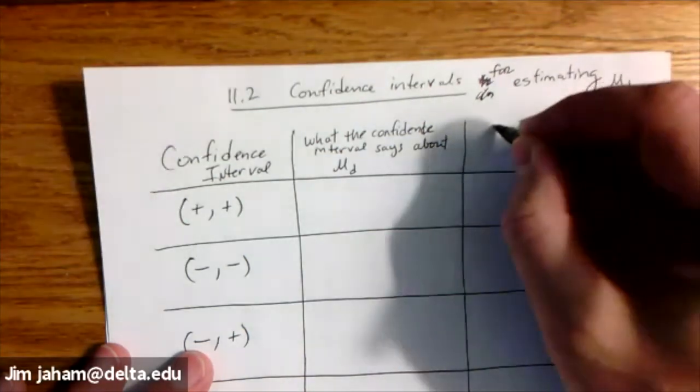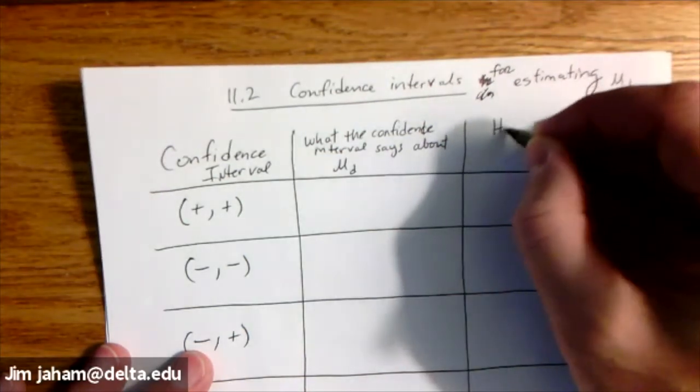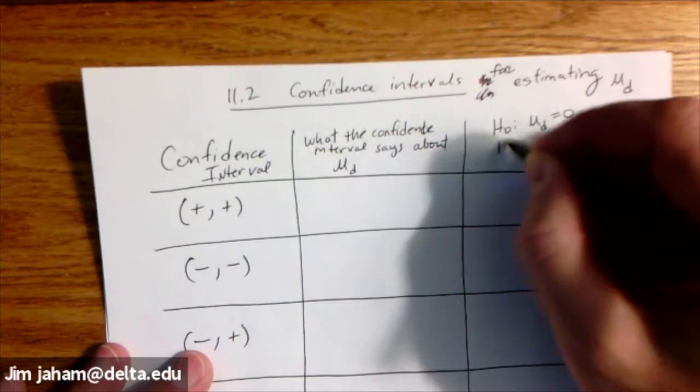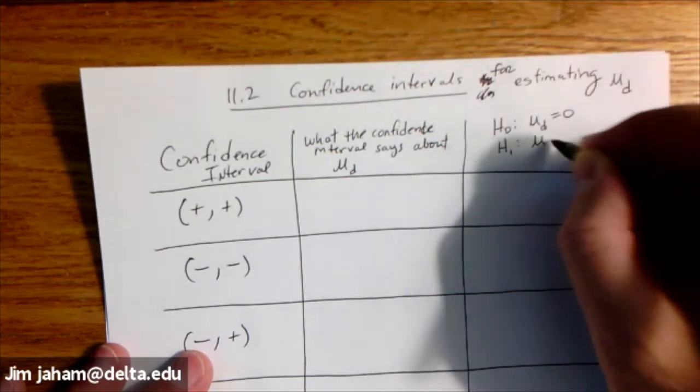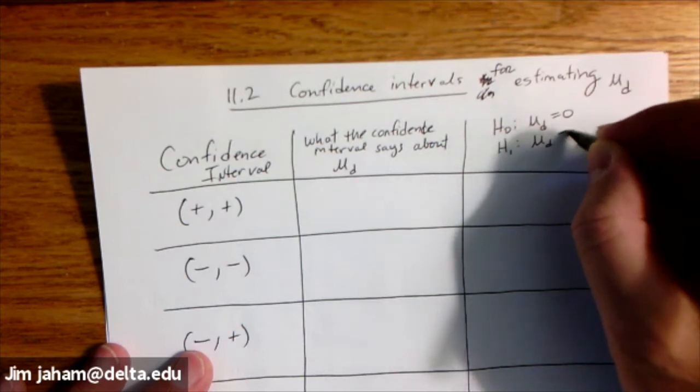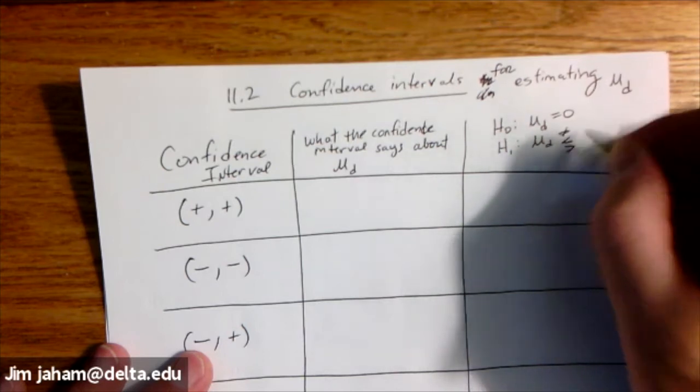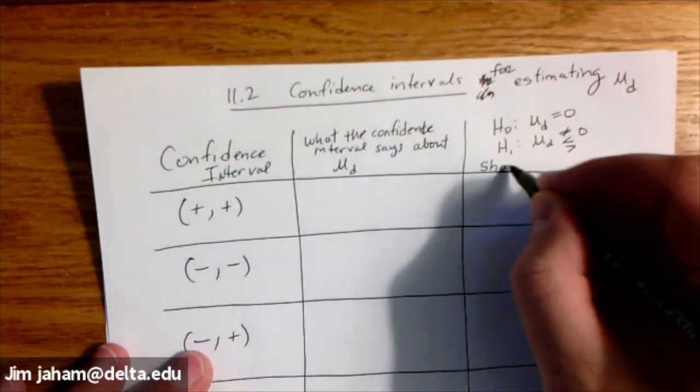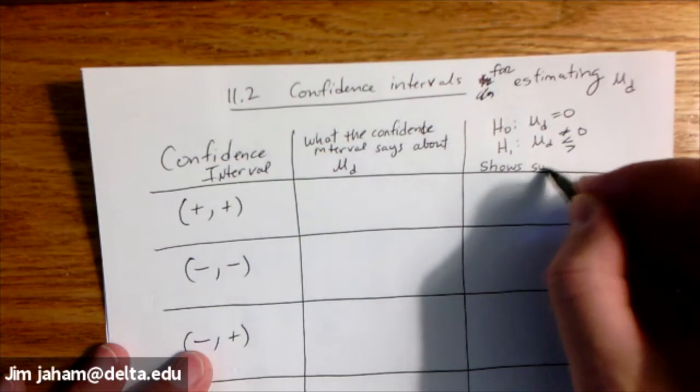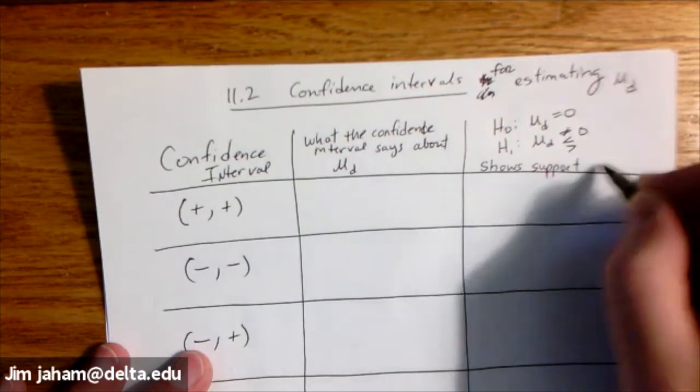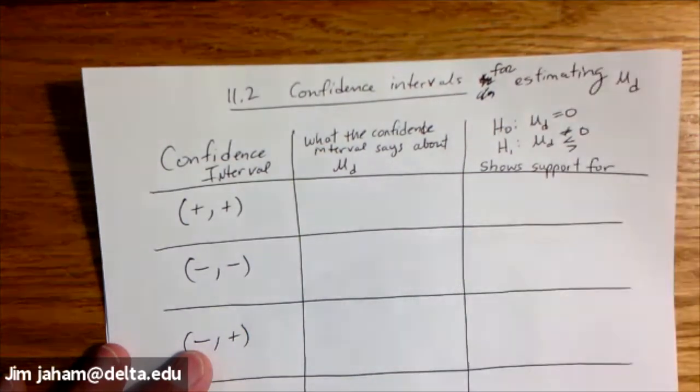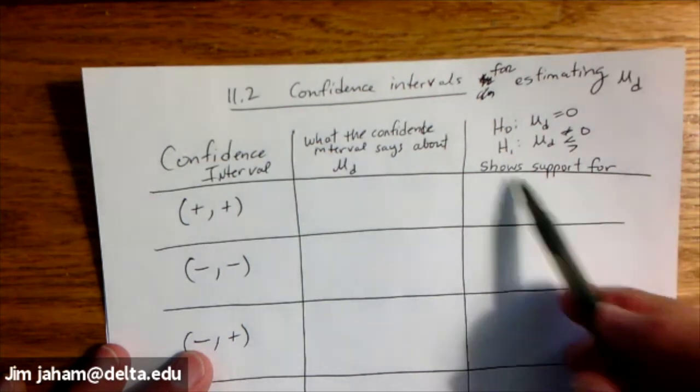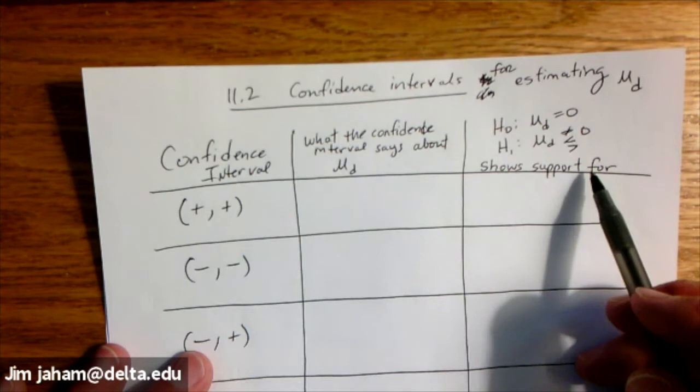And then over here, if the null hypothesis is mu sub d equals zero, and the alternative is mu sub d not equal to or less than or greater than zero, then this column will say that the confidence interval shows support for, and then we'll specify the hypothesis that the confidence interval shows support for.